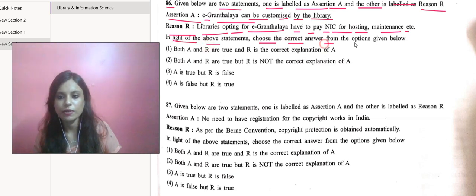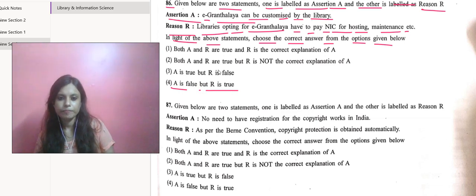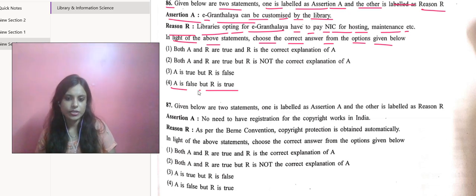We have to go with A is false but R is true. A is false - it is not customized by the library. So A is false and R is true.